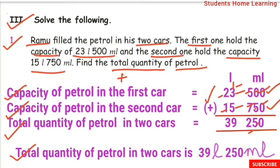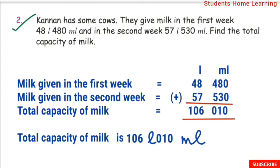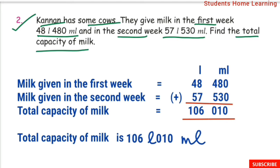Word problem 2: Karnan has some cows. They gave milk in the 1st week: 48 liter 480 milliliter. In the 2nd week: 57 liter 530 milliliter. Find the total capacity of milk. Milk given in the 2nd week is 57 liter 530 ml.